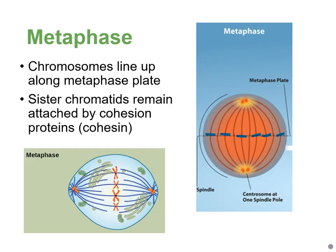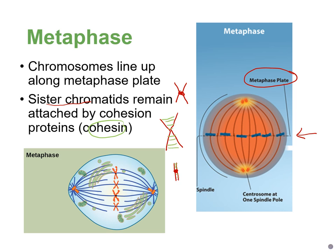In metaphase, all the chromosomes line up on the metaphase plate — also called the equatorial plane or equator. The sister chromatids are still stuck together, held by proteins called cohesin proteins. In a human somatic cell, all 46 chromosomes would be lined up in the middle — chromosome 1, 2, 3, all the way to 46 in a three-dimensional spherical arrangement.